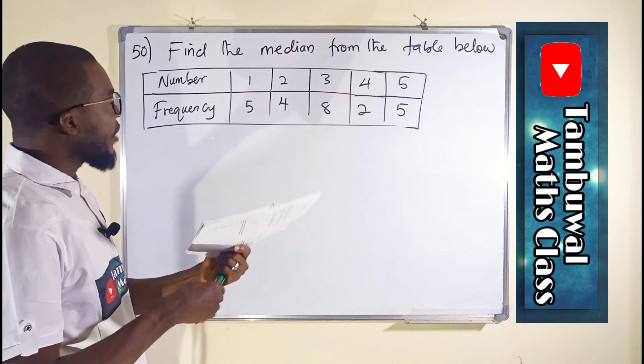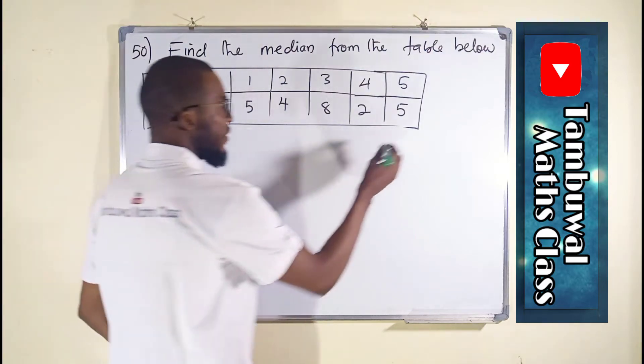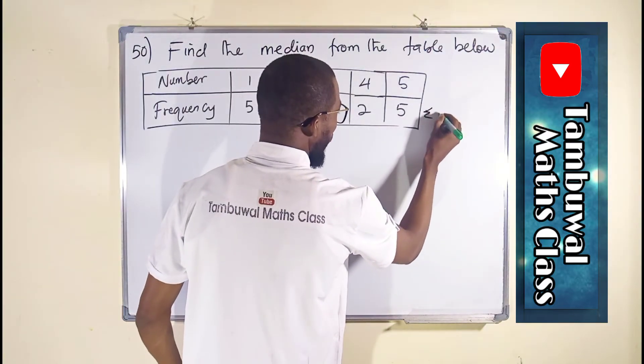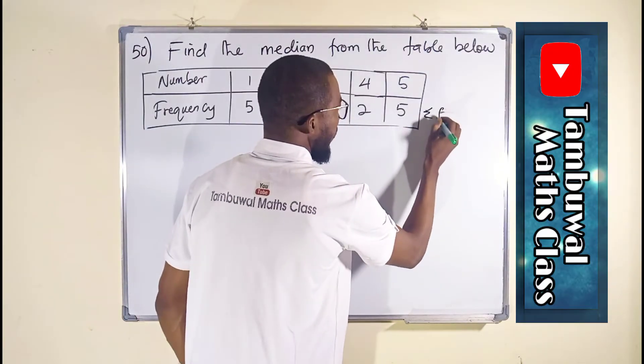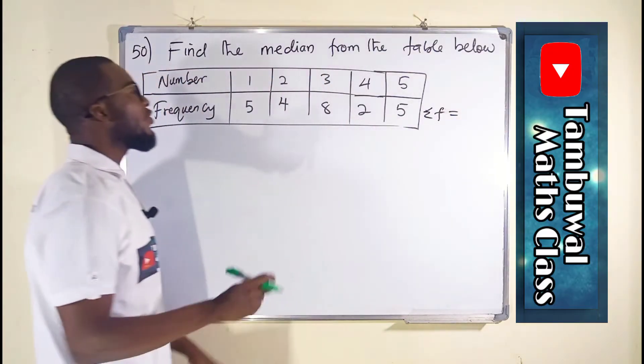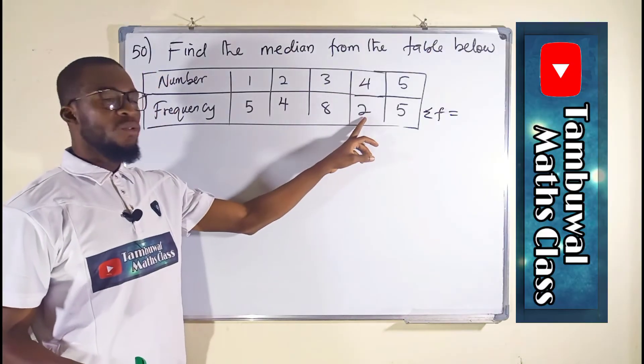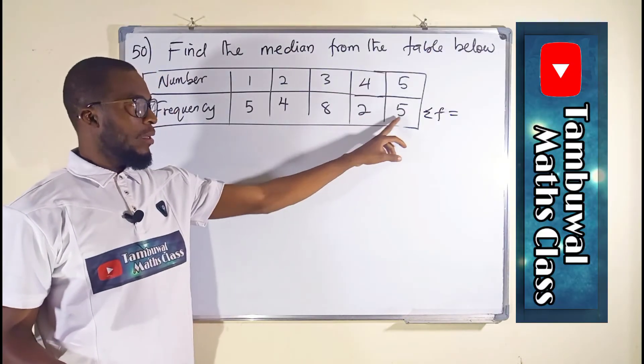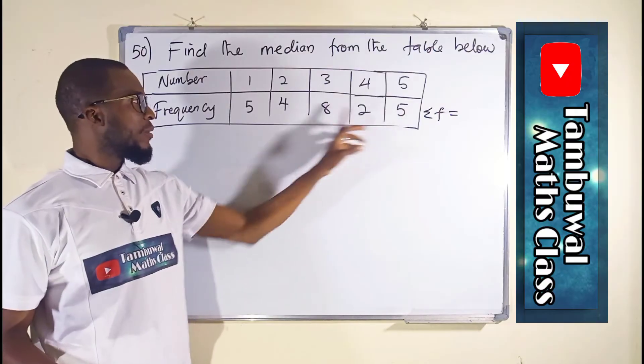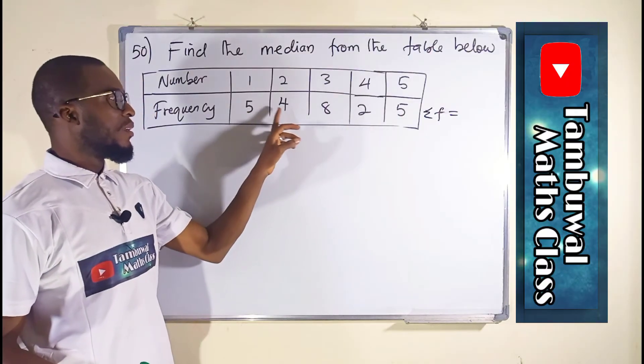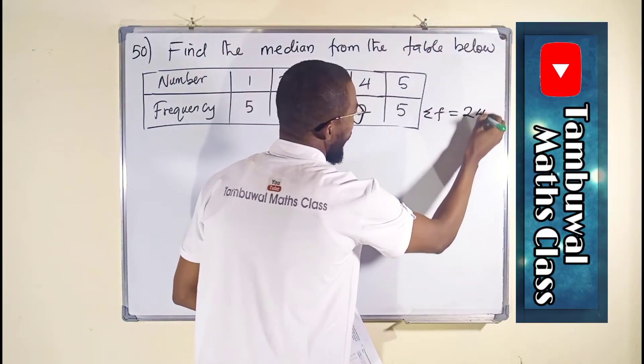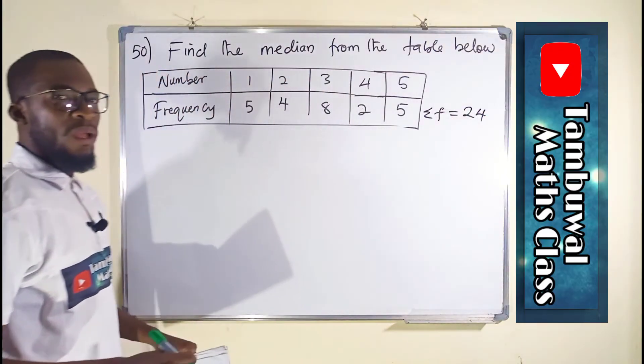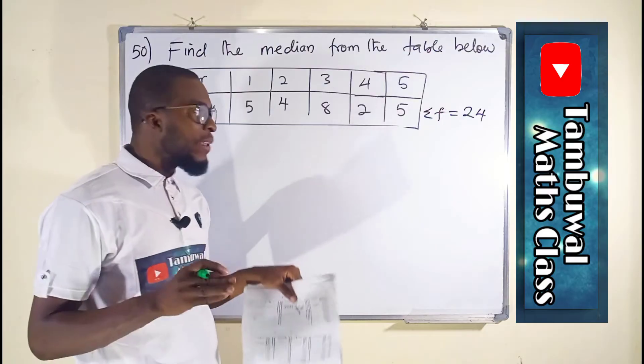So what we are going to do here is add all the frequency together. That is the first task. Summation of all the frequency, or summation of F, will be equal to: we have 8 plus 5 is 10, plus 5 is 15, plus another 5 is 20, and this one makes 24. So we have 24.